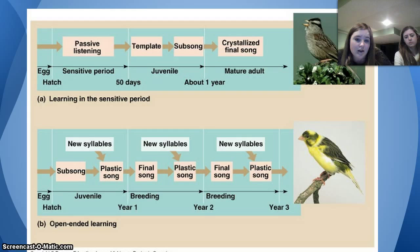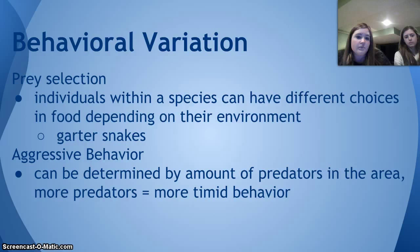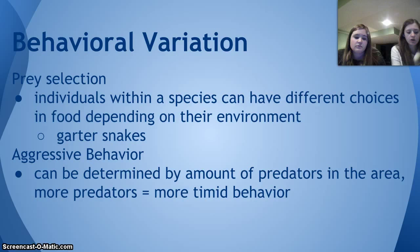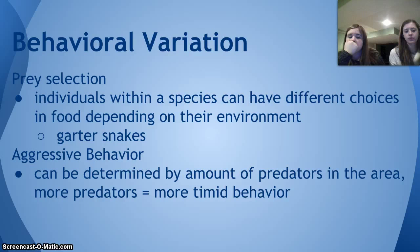For behavioral variation, there are different types of behaviors. For prey selection, individuals within a species can have different food choices depending on their environment. For example, garter snakes that live in areas without much water don't eat slugs, but ones that live close to water eat certain types of slugs. For aggressive behavior, it can be determined by the number of predators in the area — the more predators there are, the more timid the behavior.